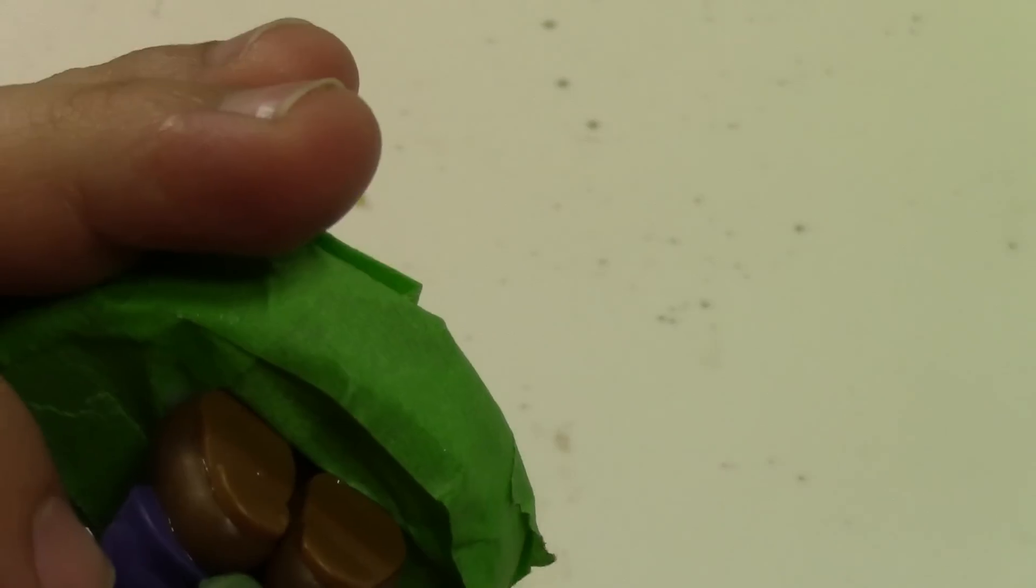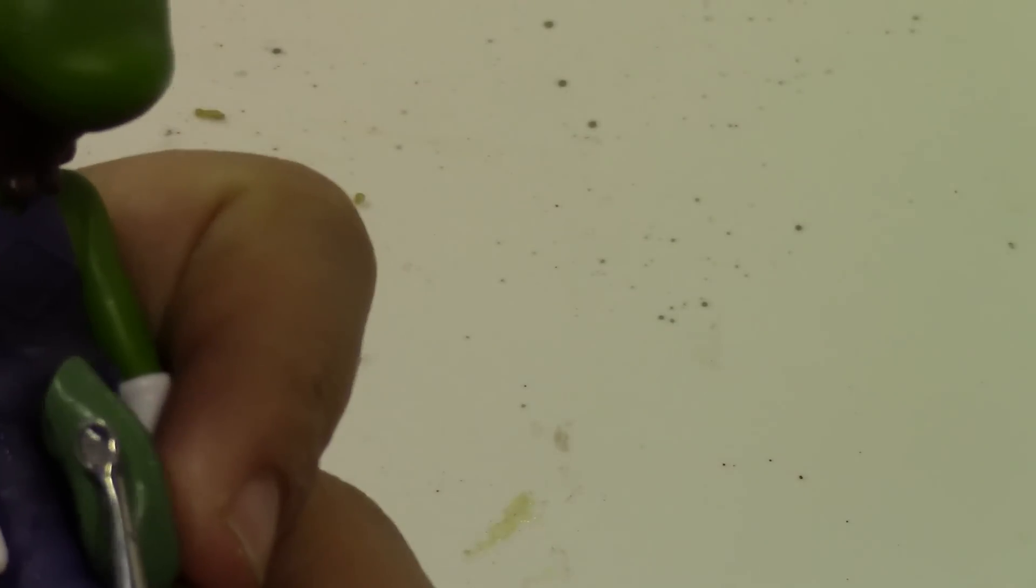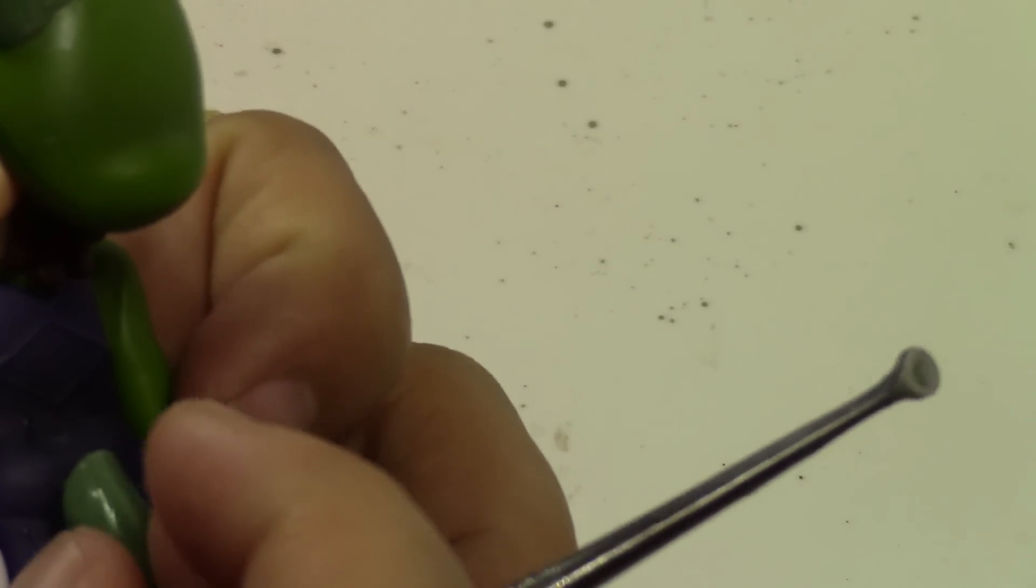And again, use a wet sculpting tool as well as wet fingers in order to get that smooth finish on the tail and get it ready for painting.